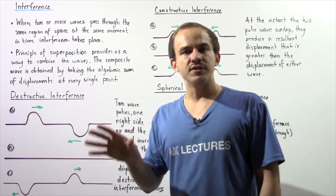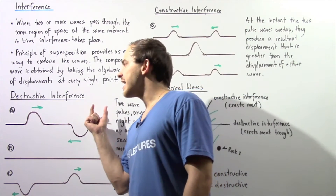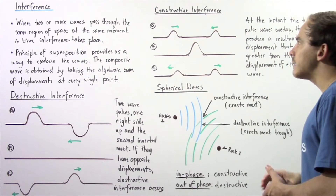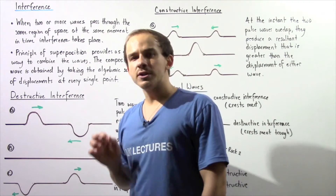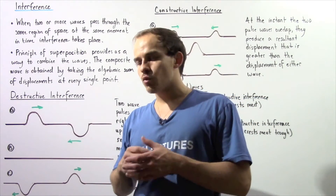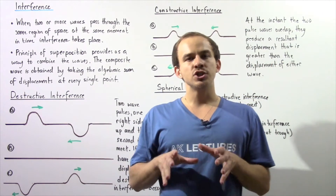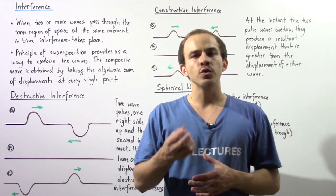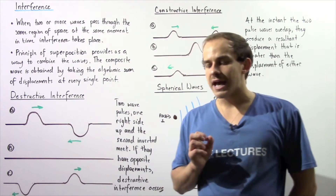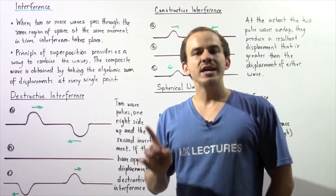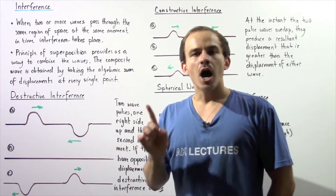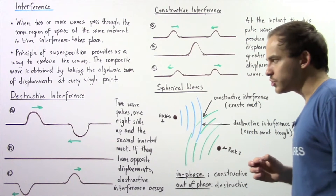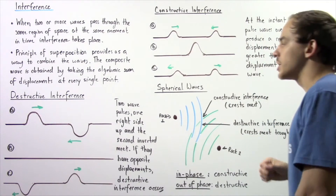There are two main types of wave interference we're going to discuss: destructive interference and constructive interference. But before we get into these types, let's recall the principle of superposition. This principle gives us a way to add our waves to create the composite wave — we take the algebraic sum of the displacements of each wave at every single moment in time.